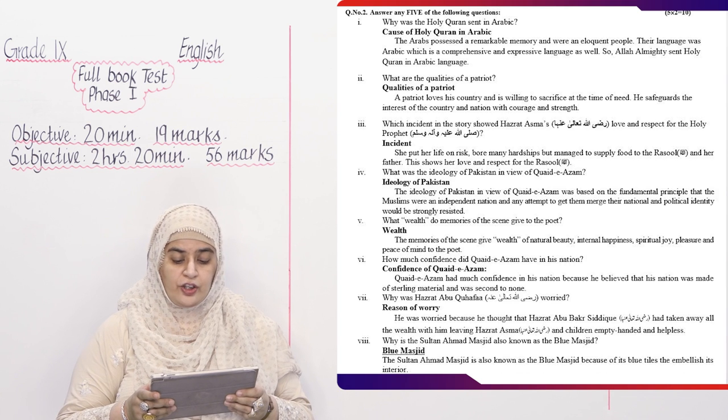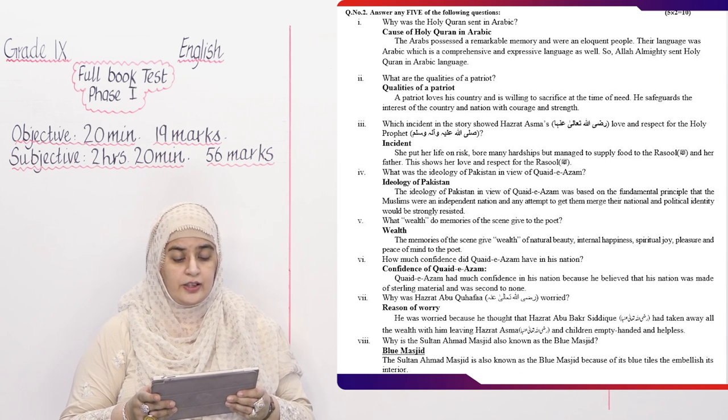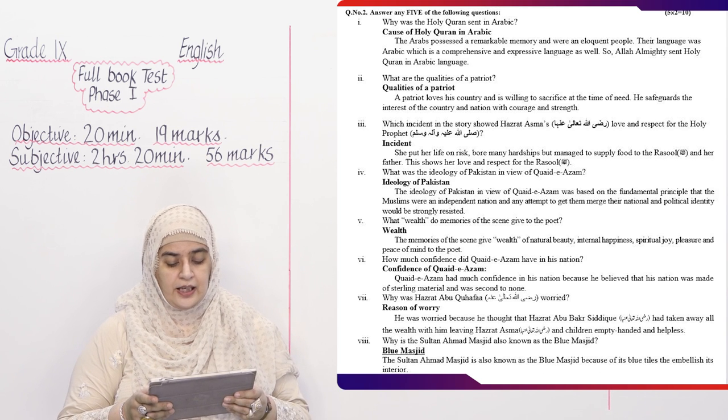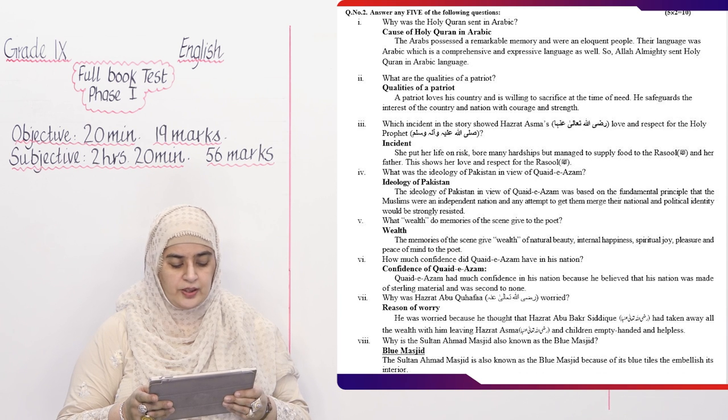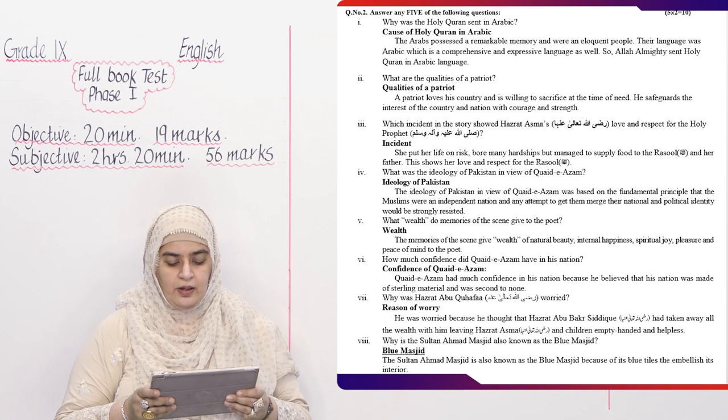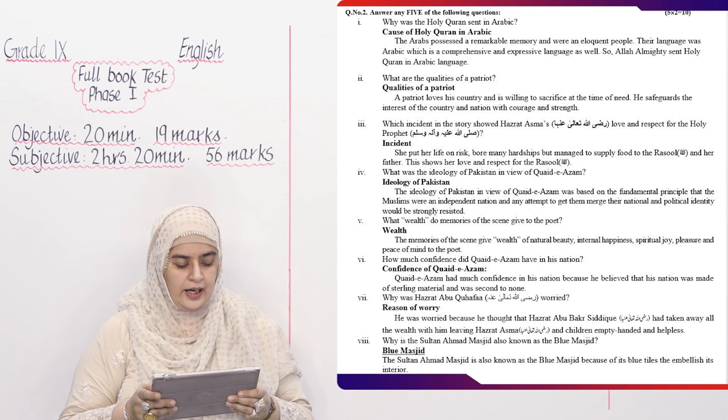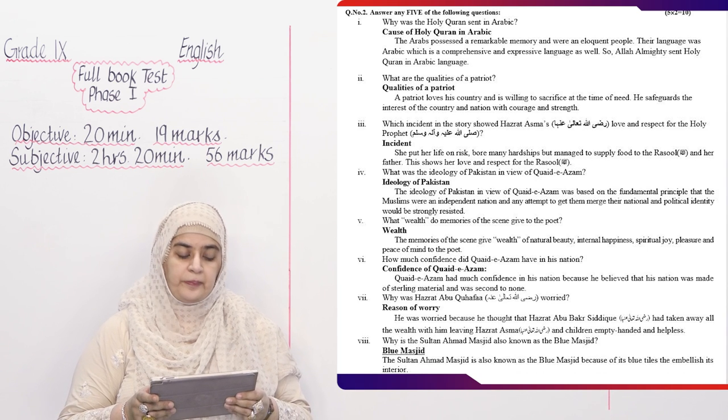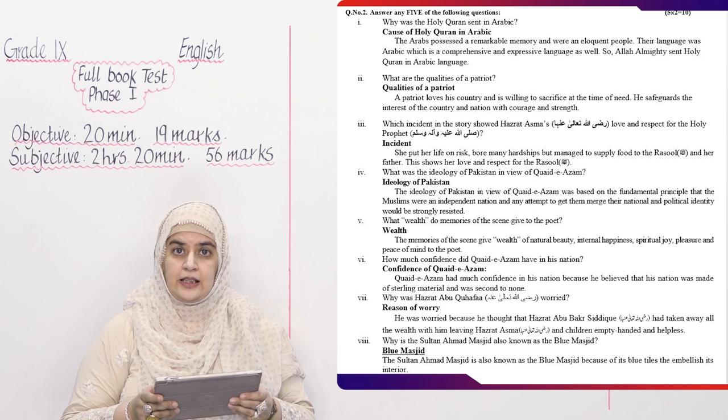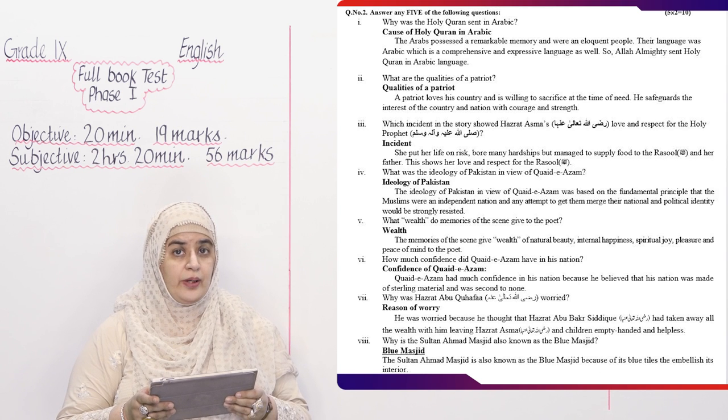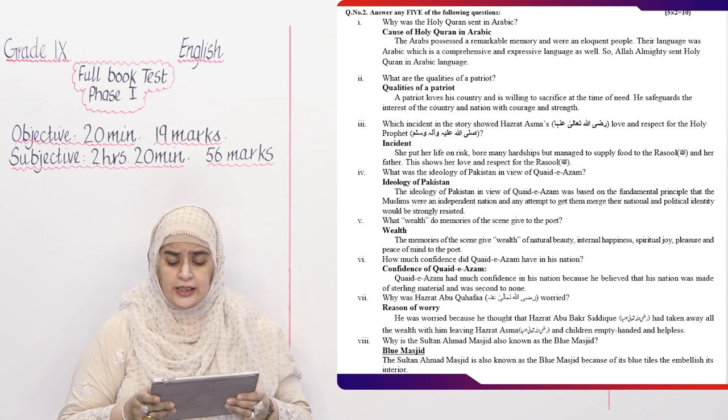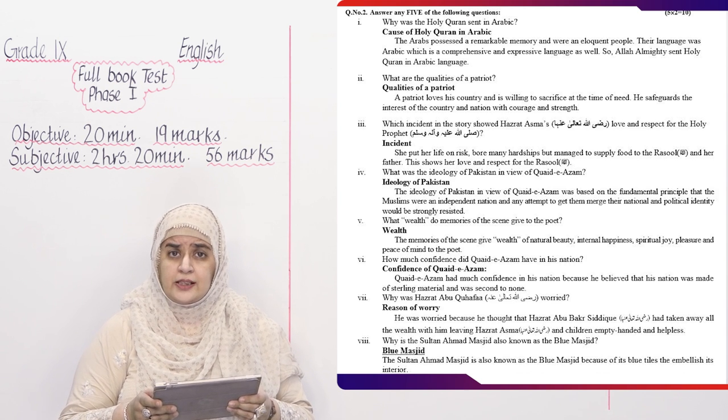Question number three: Which incident in the story shows Hazrat Asma R.A. Anha's love and respect for the holy Prophet sallallahu alayhi wa sallam? And you will give the heading of the incident and you will write: She put her life on risk, bore many hardships, but managed to supply food to the Rasul sallallahu alayhi wa sallam and her father. This shows her love and respect for the Rasul sallallahu alayhi wa sallam. Question number four: What is the ideology of Pakistan in view of Quaid-e-Azam? And the answer is ideology of Pakistan in the view of Quaid-e-Azam. The ideology of Pakistan in view of Quaid-e-Azam was based on the fundamental principle that the Muslims were an independent nation and any attempt to get them merged with their national and political identity would be strongly resisted.